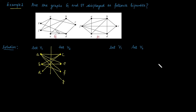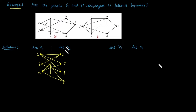Take vertex E: it is adjacent with A, B, and D, and they are all placed in the opposite set. Take vertex D: D is adjacent with E and F, and they are already placed in the opposite set. Take vertex F: F is adjacent with A, B, and D, and they are all already in set V1, while F is in set V2. Take vertex G: G is adjacent with A and D, which are already in the opposite set. So graph G is a bipartite graph.